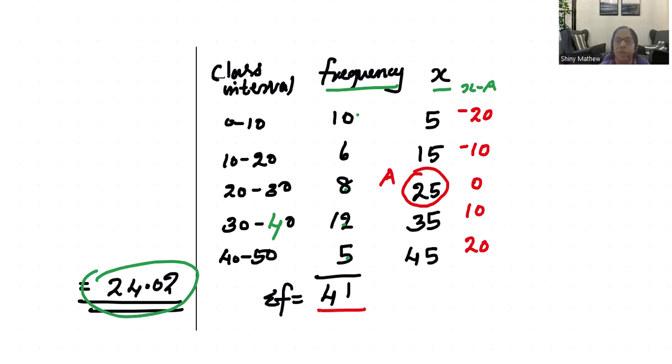Now we have a column: d equals x minus a. The assumed mean a is 25.